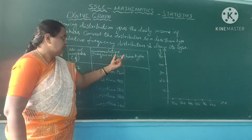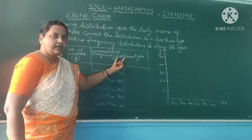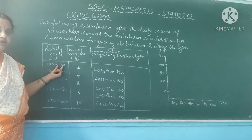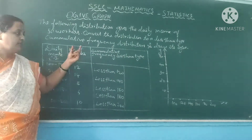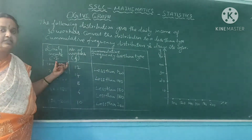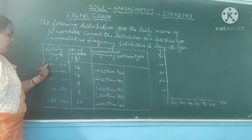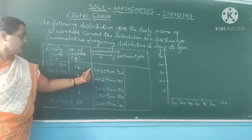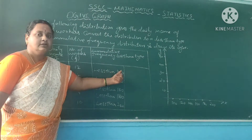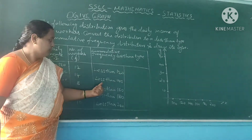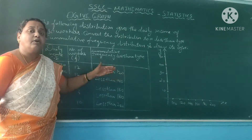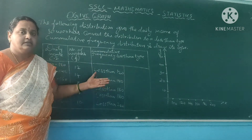If it is a more than walker graph, you should consider the lower limit. Here you will be writing more than 100, more than 130, and so on for the more than type. Is it clear?